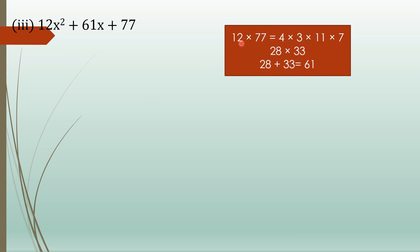Now students let's move to the third question: 12x² plus 61x plus 77. If you multiply 12 into 77 you get a very big number. So instead, write 12 as 4 into 3 and 77 as 11 into 7, then regroup: take 11 into 3 equals 33 and 4 into 7 equals 28. The product 28 times 33 equals 12 times 77, and 28 plus 33 equals 61, which is the coefficient of the middle term.